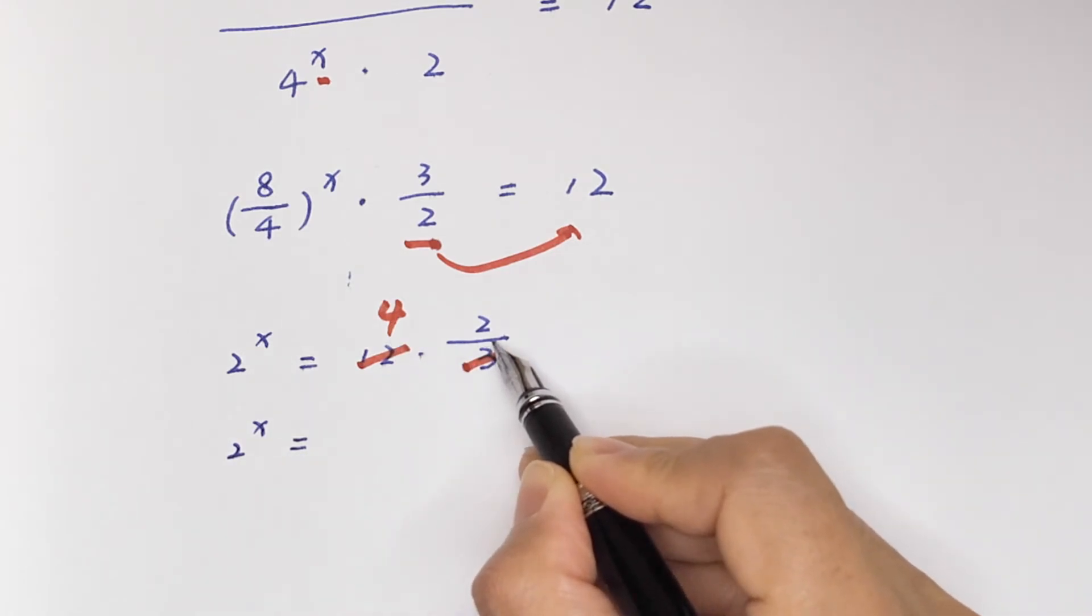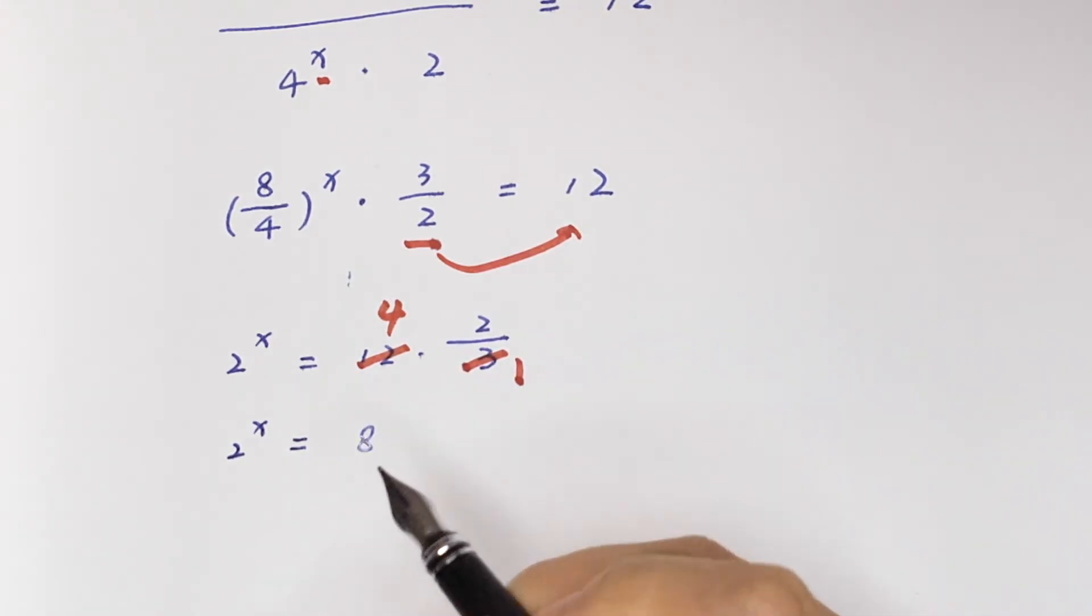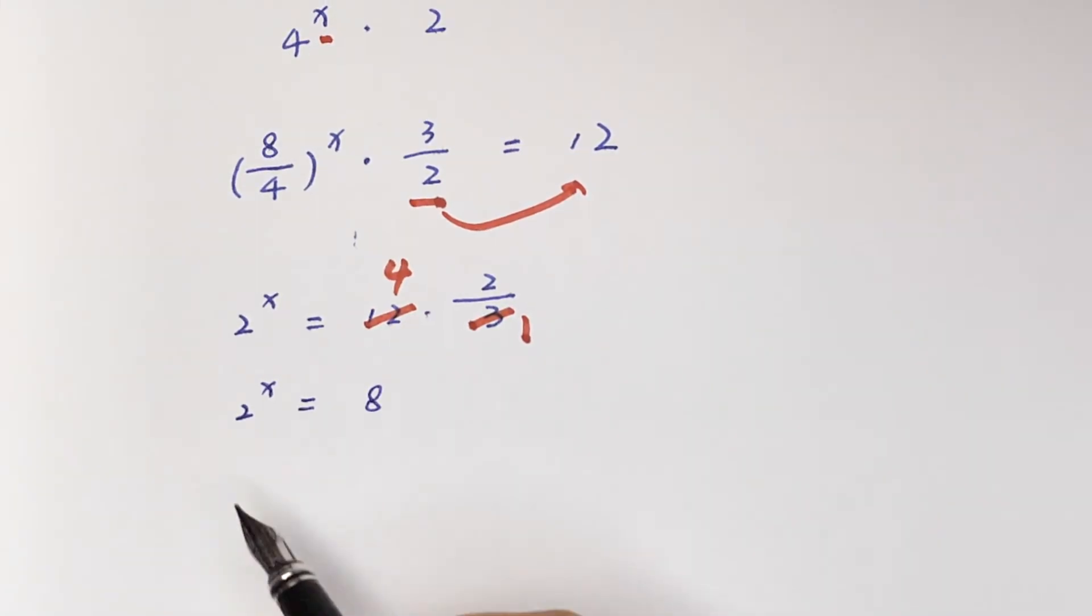Then in the next step, 2^x equals 8 is the same as 2^x equals 2^3, because we have the same base of 2, so compare the powers.